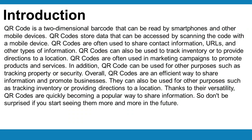QR code is a two-dimensional barcode that can be read by smartphones and other mobile devices. QR codes store data that can be accessed by scanning the code with a mobile device. QR codes are often used to share contact information, URLs, and other types of information. QR codes can also be used to track inventory or to provide directions to a location.